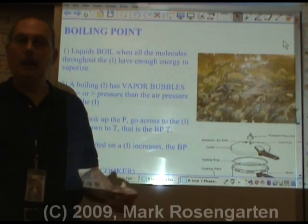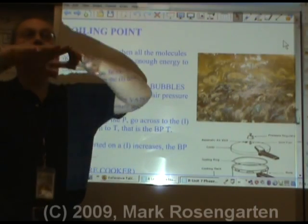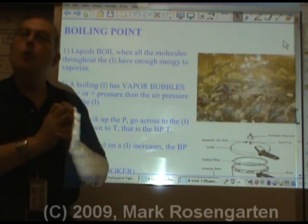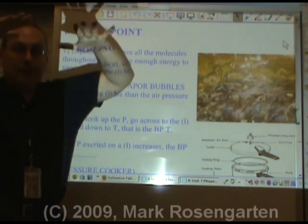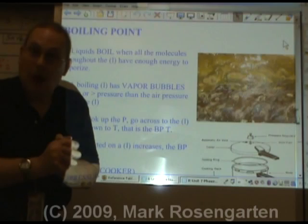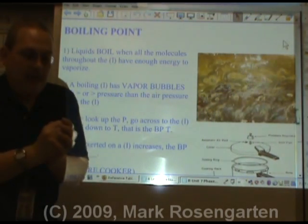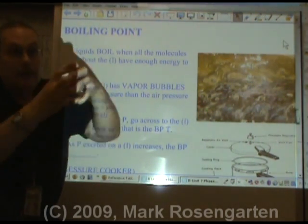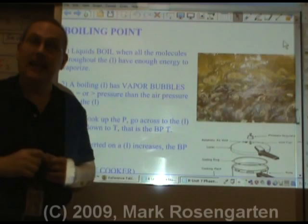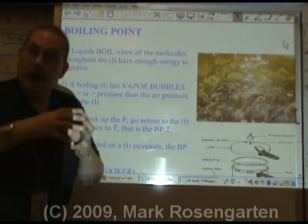When a liquid boils, what do you see? Bubbles! The reason you see bubbles is because when a liquid boils, not just the surface molecules escape like in evaporation — there are actually bubbles forming within the liquid itself. Normally, atmospheric pressure would prevent those bubbles from forming; as soon as they form, it'd be like sitting on a balloon — it just squashes back down. But when a liquid's vapor pressure is high enough — at least as high as the outside pressure — those bubbles can form and survive, float to the surface, burst, and release their vapor. That's what boiling is: when all the molecules have enough energy to escape in the form of vapor bubbles.